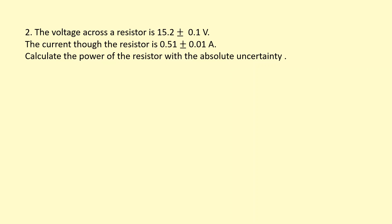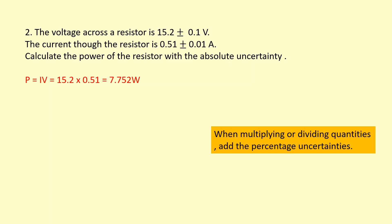The voltage across the resistor is 15.2 plus or minus 0.1 volts. The current through the resistor is 0.51 plus or minus 0.01 amps. Calculate the power of the resistor with the absolute uncertainty. Power is current times voltage, so multiply those two together to get the power. For the absolute uncertainty, because we're multiplying numbers together — or even if dividing — we add the percentage uncertainties.